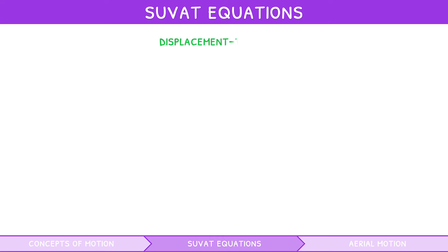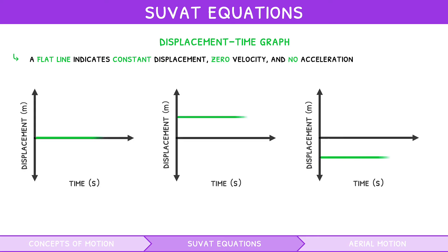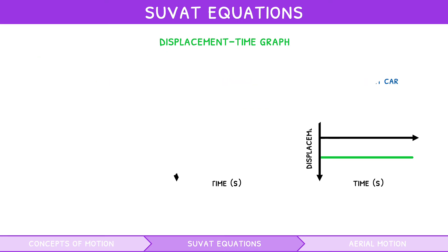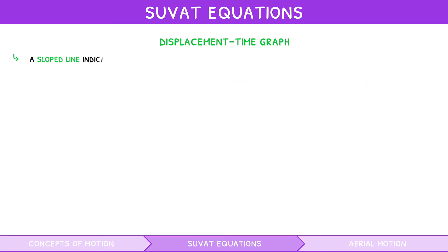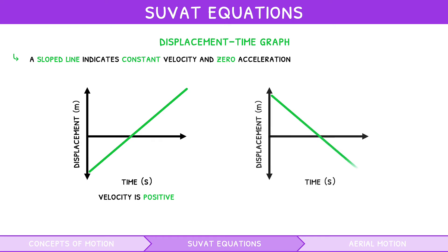For a displacement-time graph, a flat line indicates constant displacement, zero velocity, and no acceleration — an example would be a stationary car. A sloped line indicates constant velocity and no acceleration. If it slopes upwards, velocity is positive; if it slopes downwards, velocity is negative. Examples would include a car moving forwards and moving backwards, respectively.